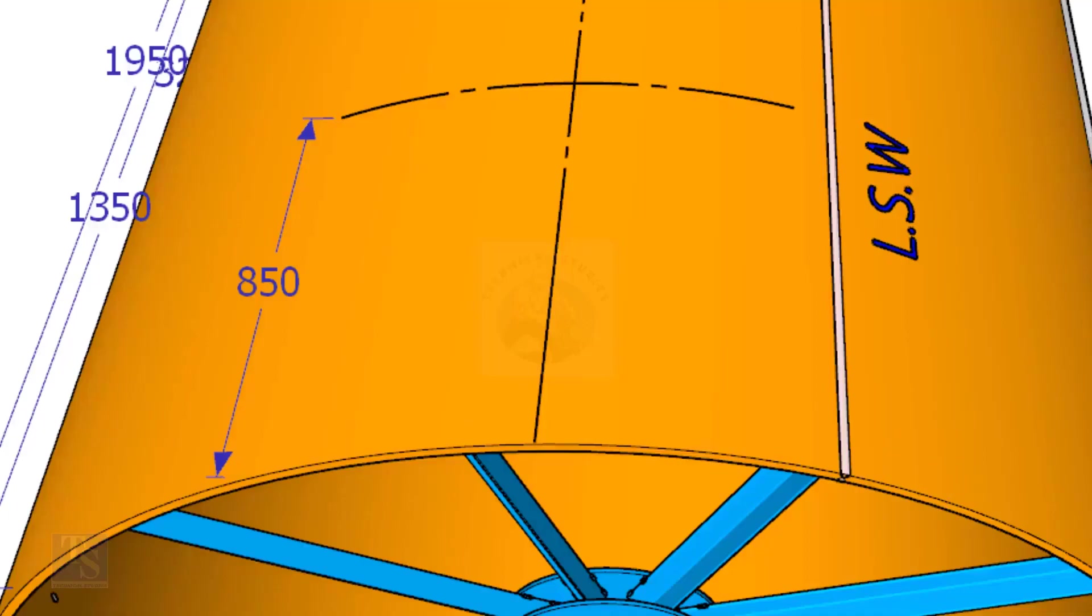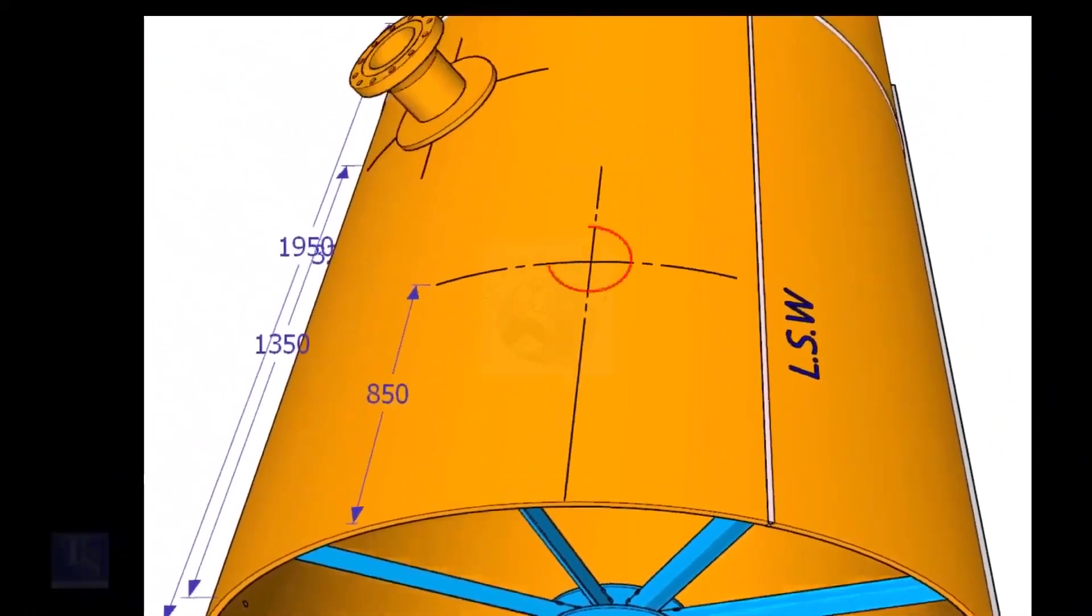Mark the same distance roughly 850 millimeters away from the end of the shell and draw a line. Now mark 850 millimeters exactly on this line from the end of the shell as shown. This is the center of the nozzle N1.